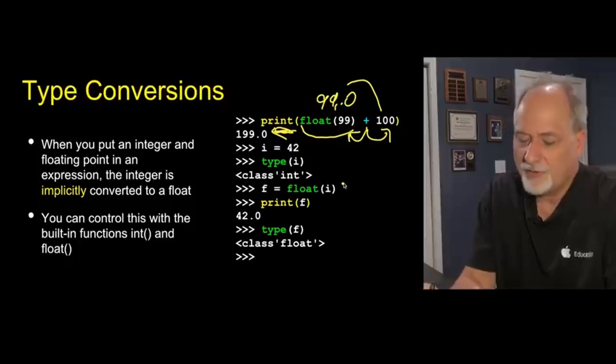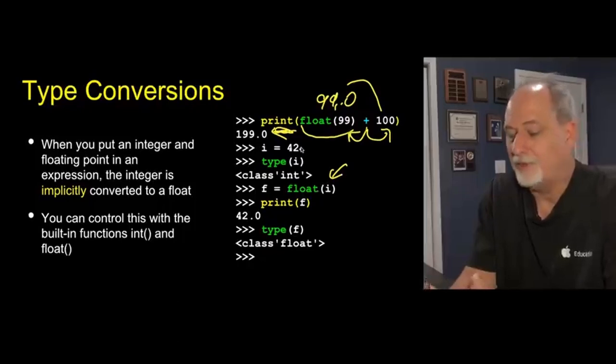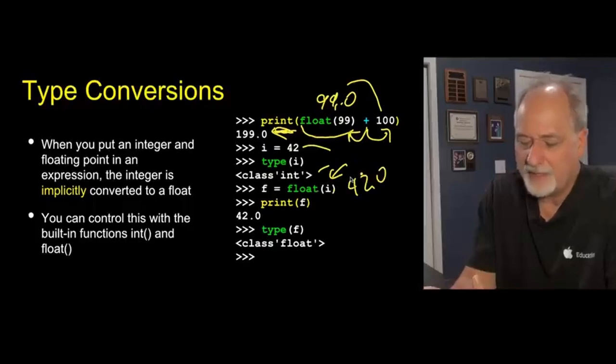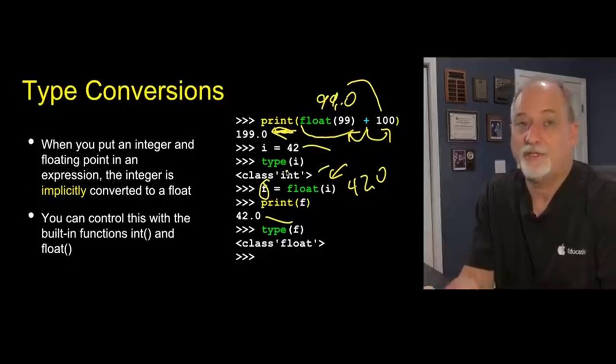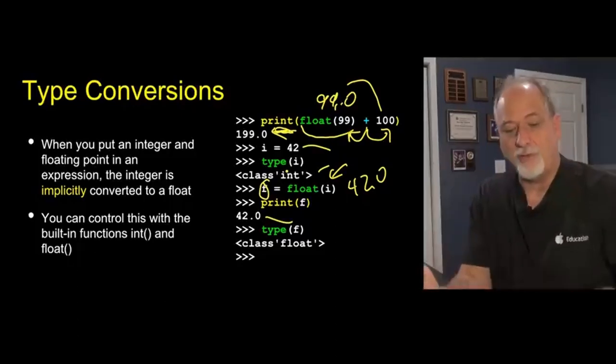I can also pass into the float function. I can say take this variable i, which has a 42, also an integer, and then give me back a floating point. So that'll be 42.0. Pass that into f. We print it out and it is indeed 42.0 and it's a float. So it knows the type and value in any variable.